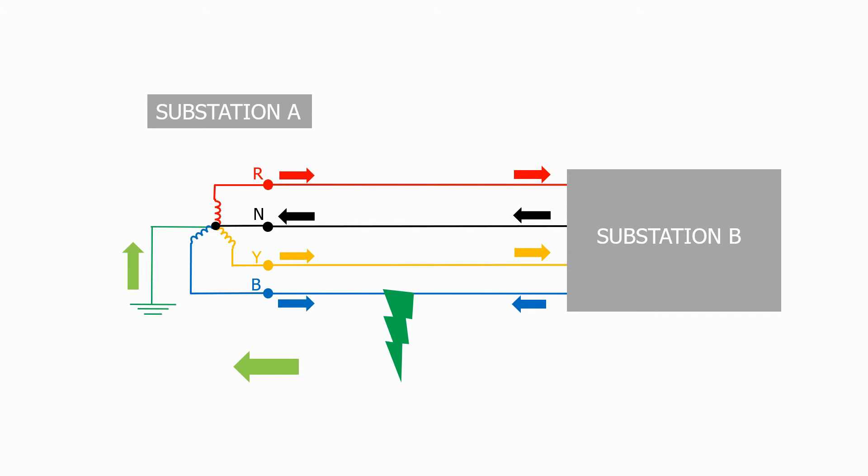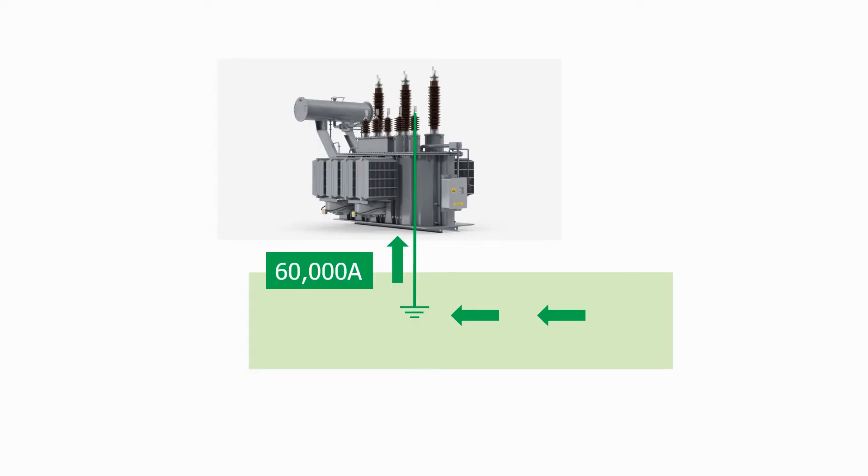In transmission substations where we can have a fault current of 60,000 amps, this voltage rise can be hundreds of volts. This voltage is called ground potential rise and all of the ground beneath the substation will rise to a similar high level. This can be extremely hazardous for anyone working inside the substation as the magnitude of the voltage at their feet can be different to the voltage found in the metallic objects that they may be touching.